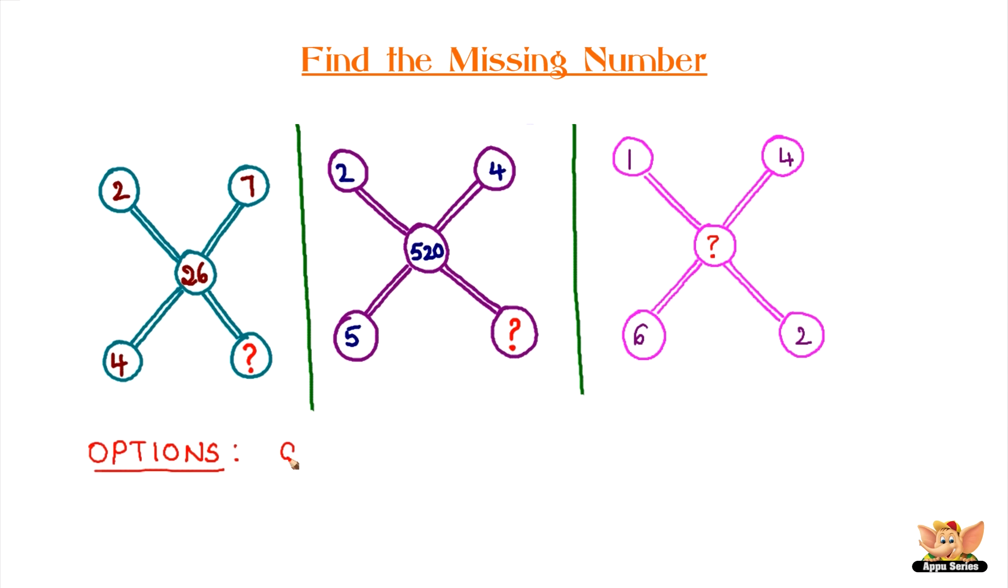Your options are A: 12, B: 11, C: 13, D: 24. Can you figure it out? The clock is ticking.